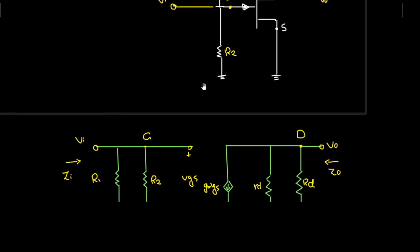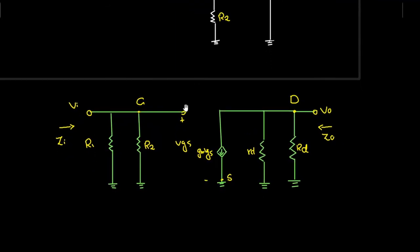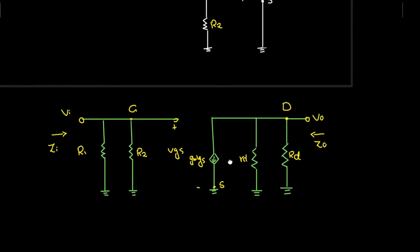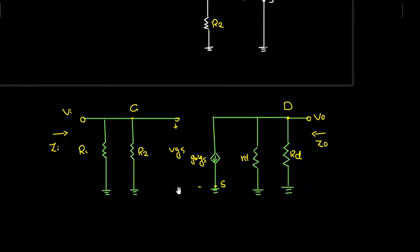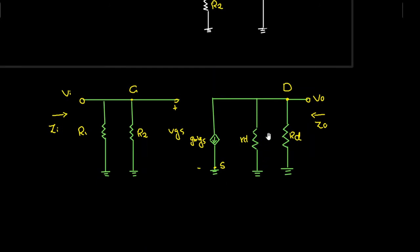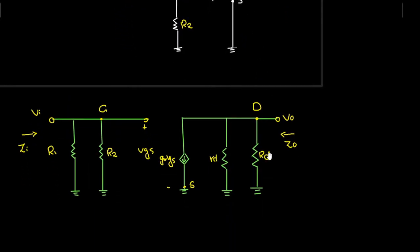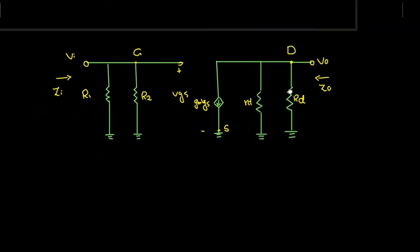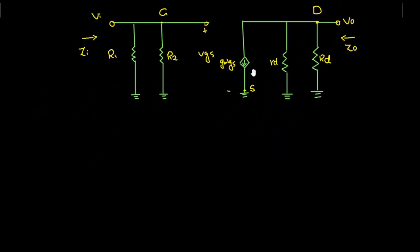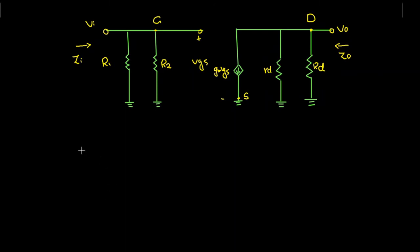When we solve this we are going to get the AC equivalent circuit. We can see that R1 and R2 are connected to the gate terminal and are both connected in parallel combination to the ground. Then we have the AC equivalent model of the junction field effect transistor which we have replaced in the circuit, and then we have the resistance Rd connected to ground. So now we need to solve this AC equivalent circuit.